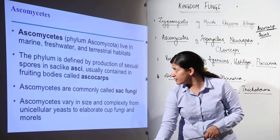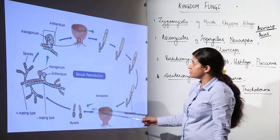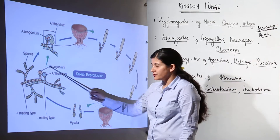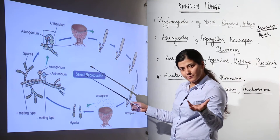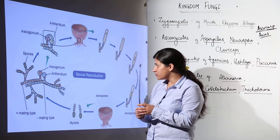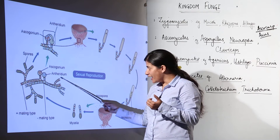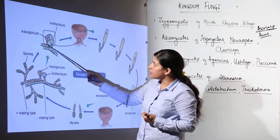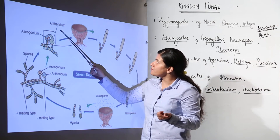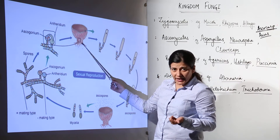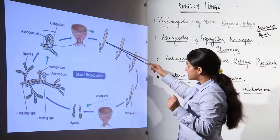In the sexual reproduction of Ascomycetes, we start with the mycelium — this is the plus mating type and this is the negative mating type. Plus and minus means one gives rise to one type of gamete and the other gives rise to another type. One has ascogonium and the other has antheridium. The contents of the antheridium transfer to the ascogonium, forming a heterokaryotic condition, which leads to the formation of the fruiting body.